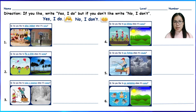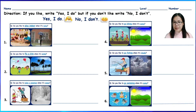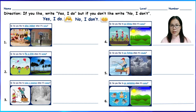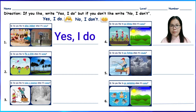Let's proceed to our worksheet. Write your name, label, number, and direction. If you like, write "Yes, I do." But if you don't like, write "No, I don't." Do you like to go swimming when it's sunny? Do you like to play indoor when it's rainy? If you like, write "Yes, I do." But if you don't like, write "No, I don't."